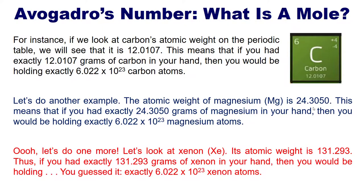Let's do another one. Xenon's atomic weight is 131.293. Thus, if you had exactly 131.293 grams of xenon in your hand, you would be holding exactly 6.022 times 10 to the 23rd xenon atoms. Make sense? Good. Let's do a lecture problem.